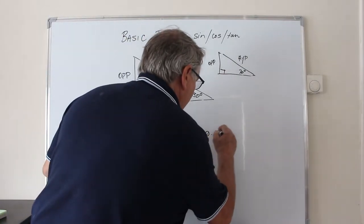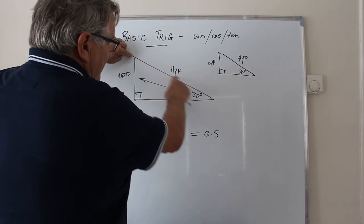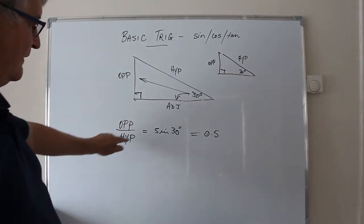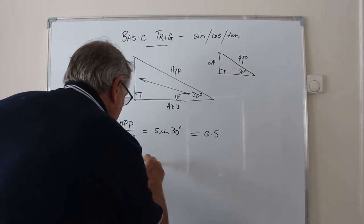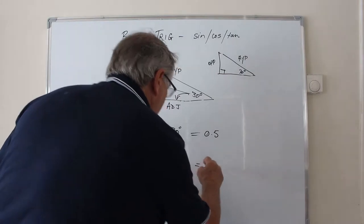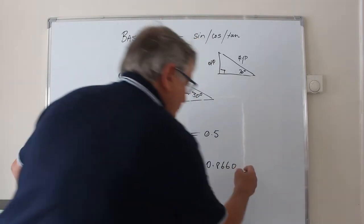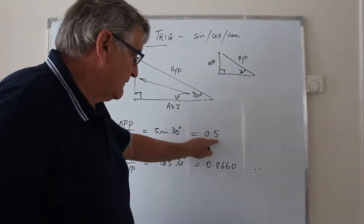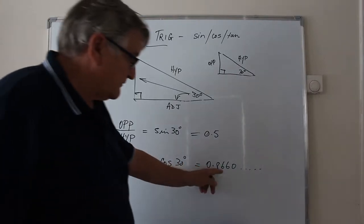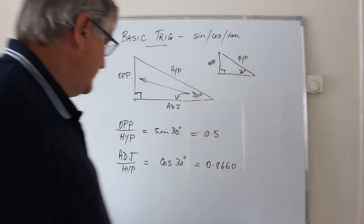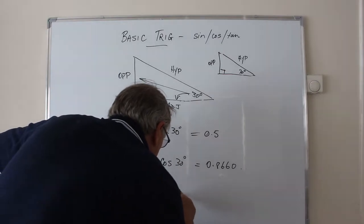The sine of 30 degrees is 0.5, which means the opposite side will always be half the length of the hypotenuse. Adjacent over hypotenuse is called the cosine, or cos, of 30 degrees — any calculator will tell you that's 0.8660. Some of these values go on forever depending on how many decimal places you need. Opposite over adjacent is the tangent of the angle, so tan of 30 degrees.